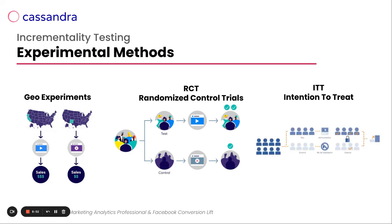Intention to treat is another method — a variant of randomized controlled trials. In this case, we take into account even people in the test group who may not actually see our ads, for example because they don't open or use Facebook, and therefore won't be exposed to the campaign.